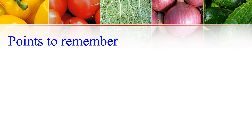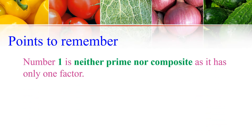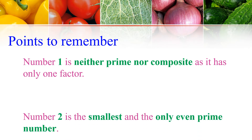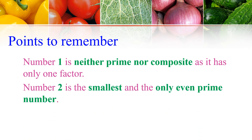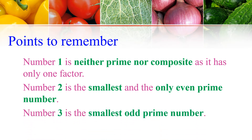The important points to remember: Number 1 is neither Prime nor Composite as it has only one factor. Number 2 is the smallest and the only even Prime Number. Similarly, number 3 is the smallest odd Prime Number.